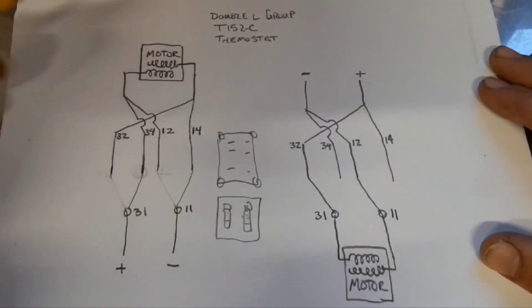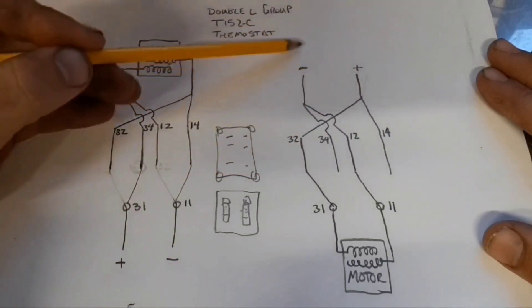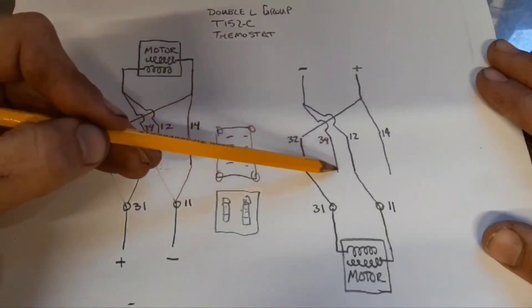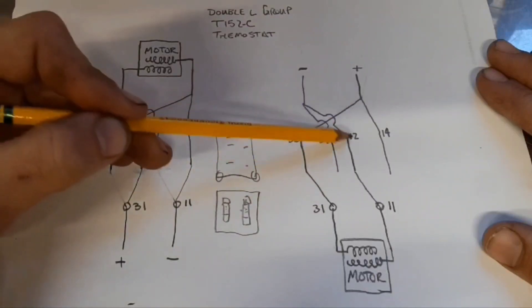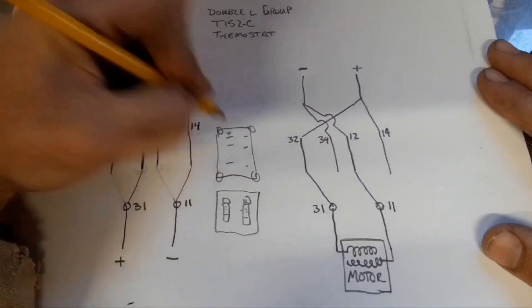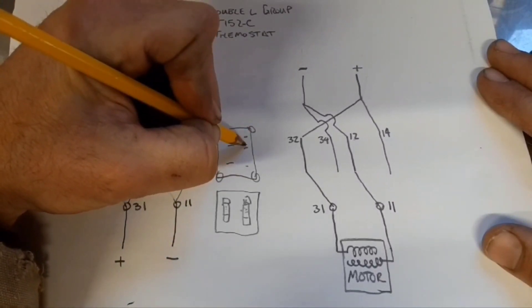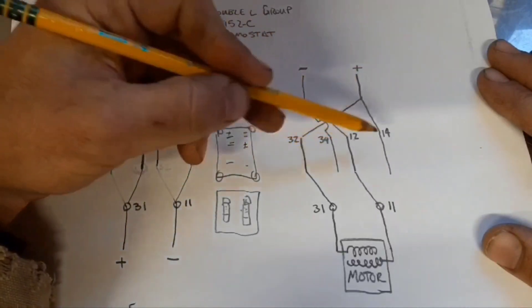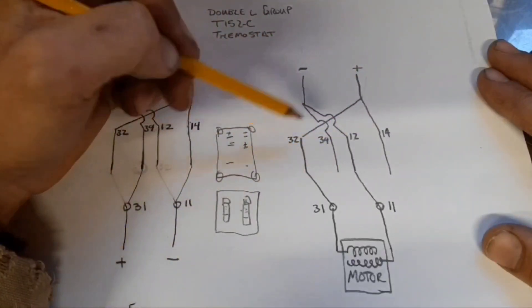The way I figured out to counter that is, it's actually hooking it up backwards. So now I'm bringing my power in this side, hooking to 34 and 12, which would be here and here. And my negative goes there and there from the other side, which is 32 and 14.